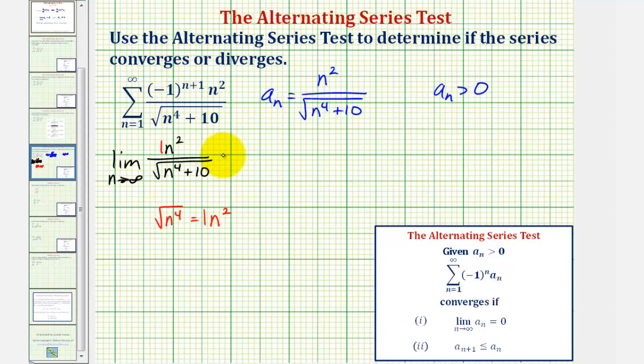So this limit equals positive one, which is not equal to zero, and therefore the series diverges by the nth term divergence test.